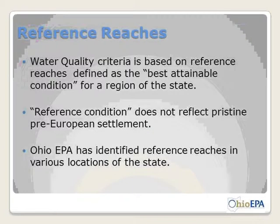We talk about reference reaches a lot within the State of Ohio. We're looking at best attainable condition — essentially a segment of a stream or a wetland that represents the best attainable condition for that type of stream in that region. A reference condition does not reflect pre-European settlement; it's the best we have currently on the landscape. Ohio EPA has identified several reference reaches and reference wetlands in the state.